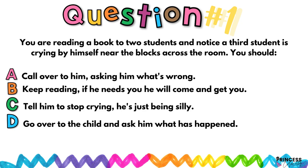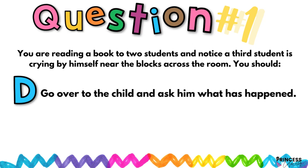Question number one: You are reading a book to two students and notice a third student is crying by himself near the blocks across the room. You should: A) call him over and ask what is wrong; B) keep reading — if he needs you he will come get you; C) tell him to stop crying and he's just being silly; D) go over to the child and ask him what has happened.